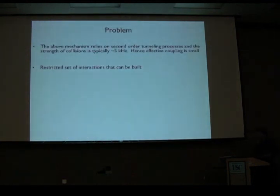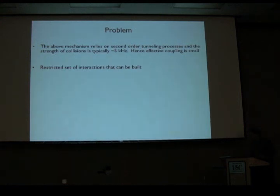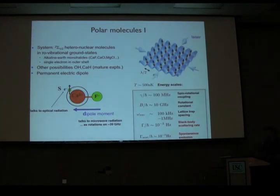Unfortunately, the interactions aren't terribly large in this model. It's limited to a second-order process in tunneling, which is assumed small, and the collisional interactions are limited to the phase-space density of two atoms in a well, typically on the order of five kilohertz. So it would be nice to have a way to make these larger. Something we've been looking at in Innsbruck is using polar molecules with dipole-dipole interactions.